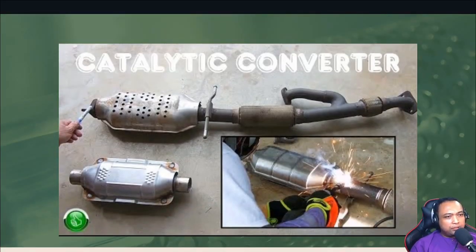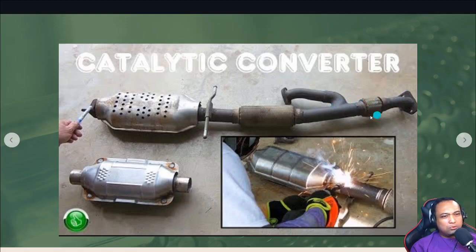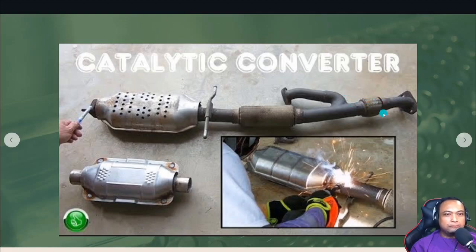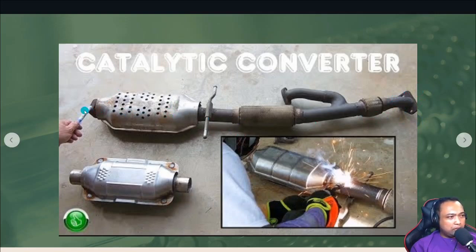This diagram shows the actual location of the catalytic converter. From the exhaust manifold, the exhaust flows through a flexible corrugated pipeline — sometimes called a 'bellows' because its structure looks like a pineapple — and then goes straight to the catalytic converter, then on to the muffler and the metal pipe. That is the location of the catalytic converter.